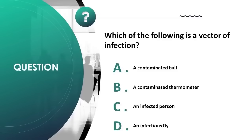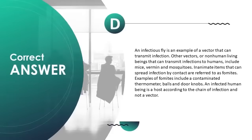Which of the following is a vector of infection? A) a contaminated ball, B) a contaminated thermometer, C) an infected person, D) an infectious fly. Correct answer is D. An infectious fly is an example of a vector that can transmit infection.